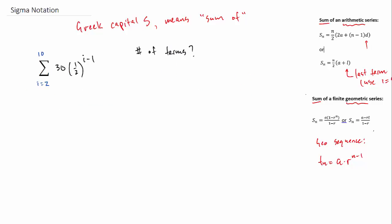So we still start the same way as before. We have to figure out how many terms are there. From 2 to 10, that's actually 9 terms. 2, 3, 4, 5, 6, 7, 8, 9, 10. There's 9 terms. Top minus bottom plus 1.